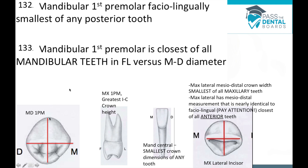The mandibular first premolar is closest of all mandibular teeth in facial-lingual versus mesiodistal diameter. Similarly, the maxillary lateral incisor has a mesiodistal measurement nearly identical to the facial-lingual — closest of all anterior teeth. So if the question is about anterior teeth, it's the upper lateral incisor; for posterior teeth, it's the lower first premolar. The mandibular central has the smallest crown dimension of any tooth, and the upper first premolar has the largest crown height of posterior teeth.